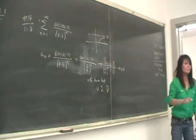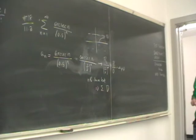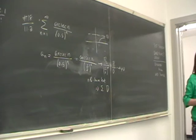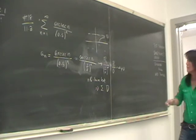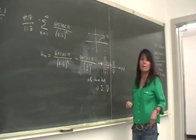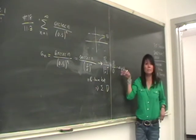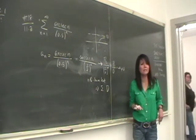Student asks: Yeah, I thought you can't divide by 0, so it's just not valid. Instructor responds: No, we are not dividing by 0, we are approaching. See this arrow? We're approaching a very big number. Limit, right?